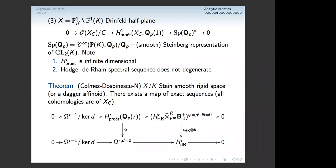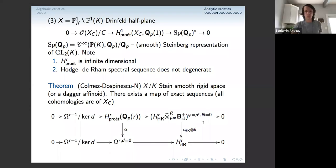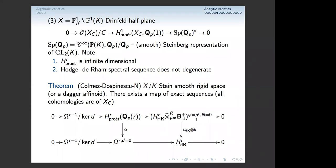Because of Stein or overconvergent structure, this derived functor is in fact concentrated in one degree. For those who know period rings, B_{st}^+ is not a very nice ring — it's a polynomial algebra, not good for computations of this type. So you replace it with B̂_{st}^+, which is a Banach space, and then it's much better. The topology actually is a real nightmare, but you have to deal with it.